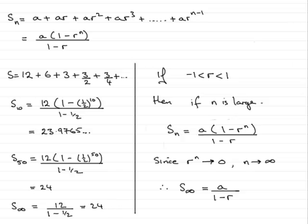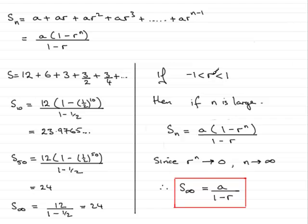So I hope you've been able to follow that. What you need to remember is this particular formula, but it's only true if the common ratio lies between minus 1 and 1. That brings us to the end of this tutorial.